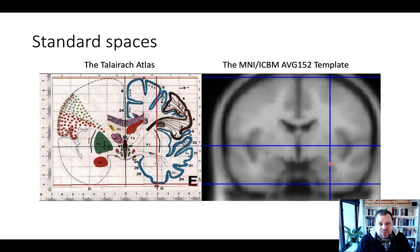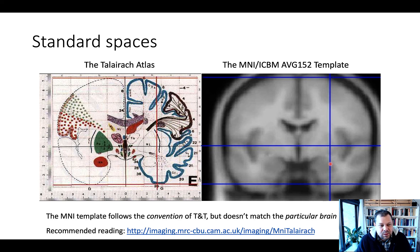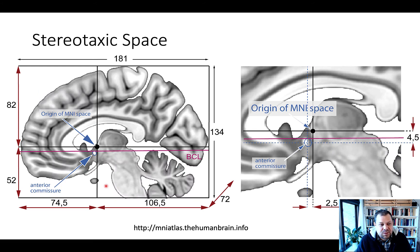We'll go a little bit beyond that because we will use the segment function in SPM, which does a little bit more than just normalizing. Now, what does this give us? Once we normalize the brain, we can talk about regions or activations within the brain in terms of their relative location to an origin point. The typical origin is the anterior commissure, a region in the brain that can be identified quite nicely. But depending on which normalization template or atlas you use, the origin might change slightly — in the Talairach atlas, it's a little bit different.